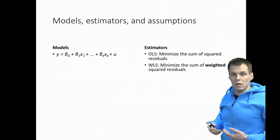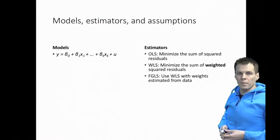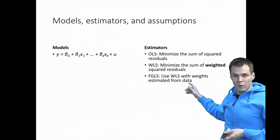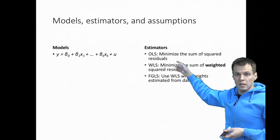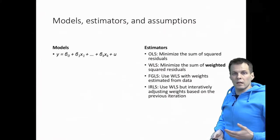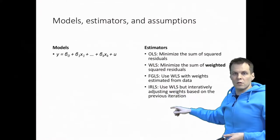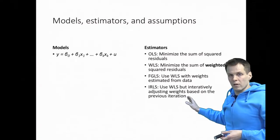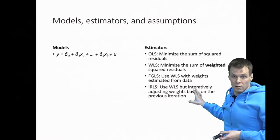To understand which scenarios favor weighted least squares, we have to understand the assumptions. There's also feasible generalized least squares, which estimates the weights from the data and therefore makes fewer assumptions than weighted least squares, with certain trade-offs. We also have iterated weighted least squares (IRLS), where the weights for each iteration are based on the previous one — a good technique when you have outlier observations.